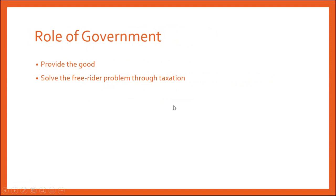With public goods, there's a role for government simply to provide the good. The government can overcome the free rider problem through its unique powers of taxation. Government can compel people to pay whether they want to or not. A private company does not have that ability.